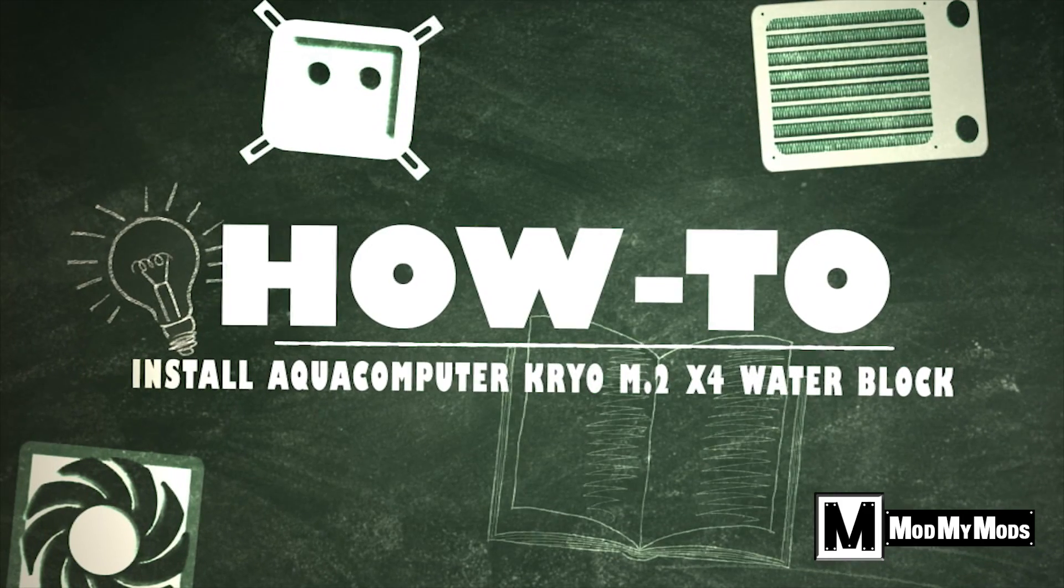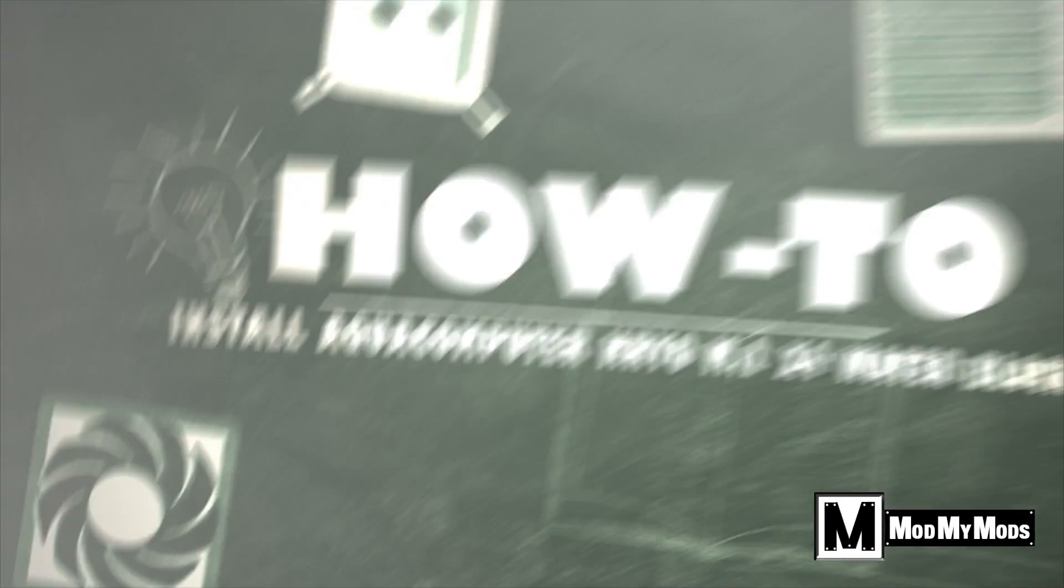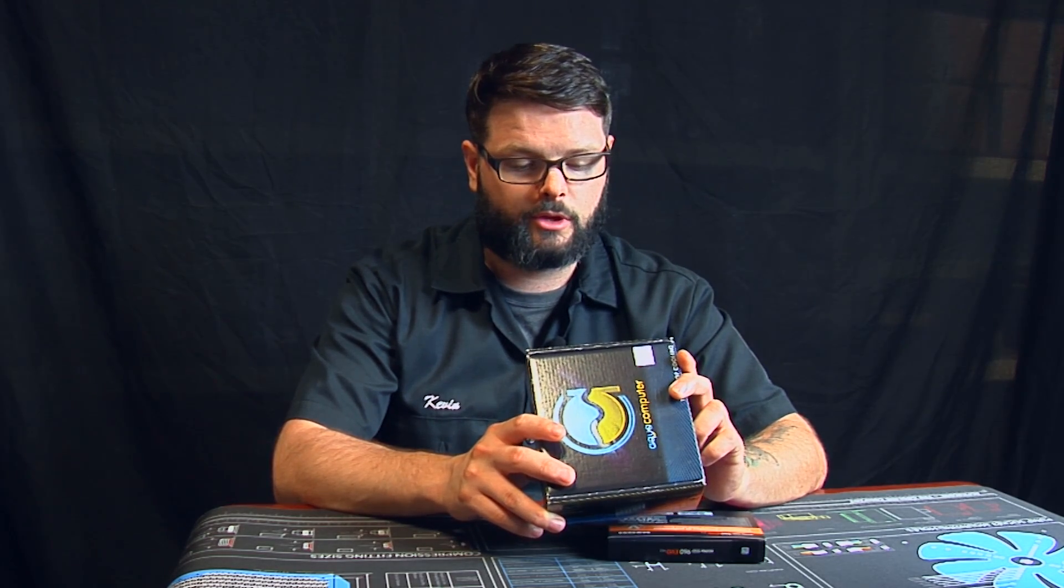What's going on guys, it's Kevin here with Mod My Mods and a quick how-to video. What we're going to do today is take this Samsung Evo 960 SSD, the M.2 version, and we're going to marry it with this, it's an Aqua Computer Wasser Kuder for the Kryo M.2.